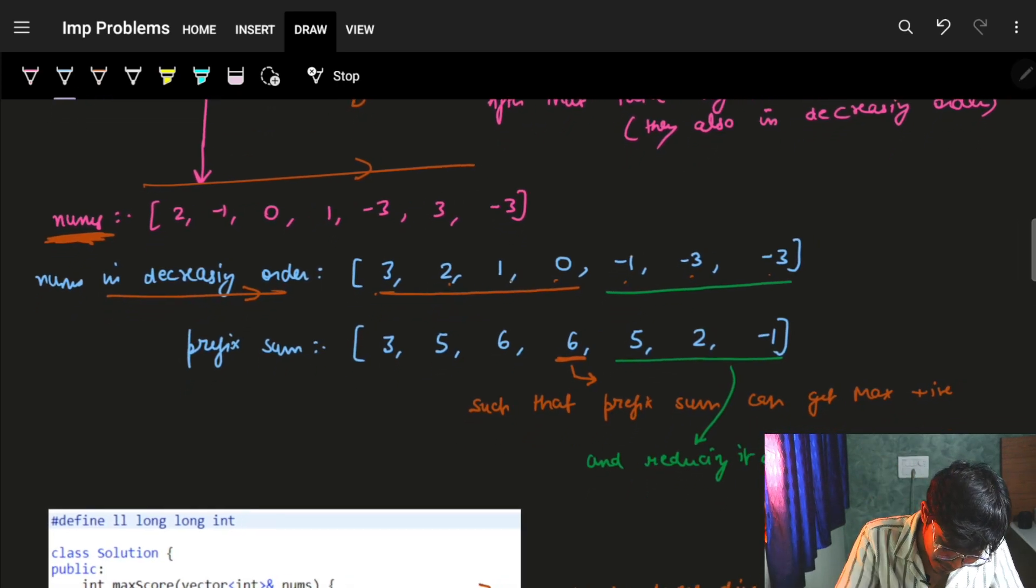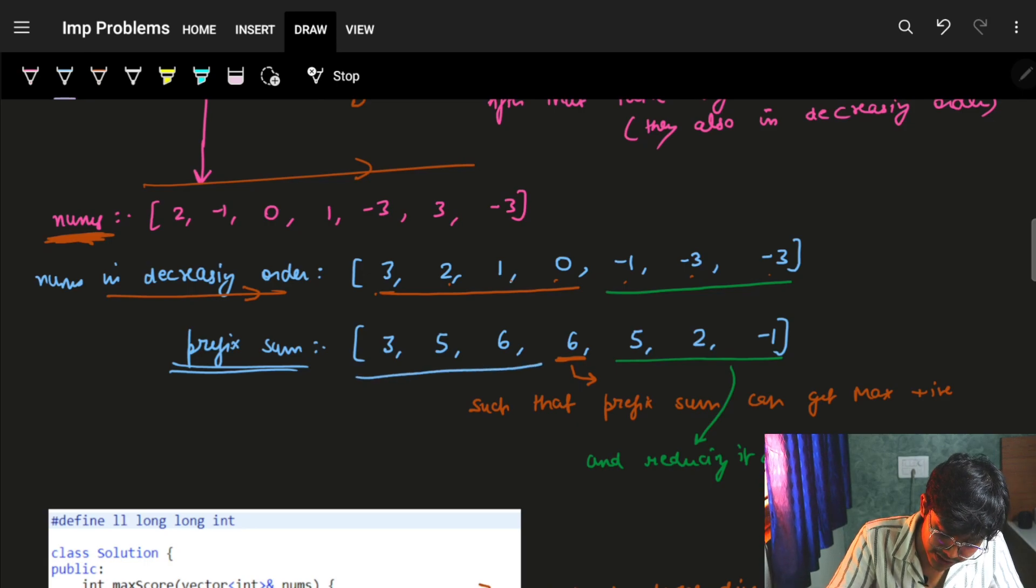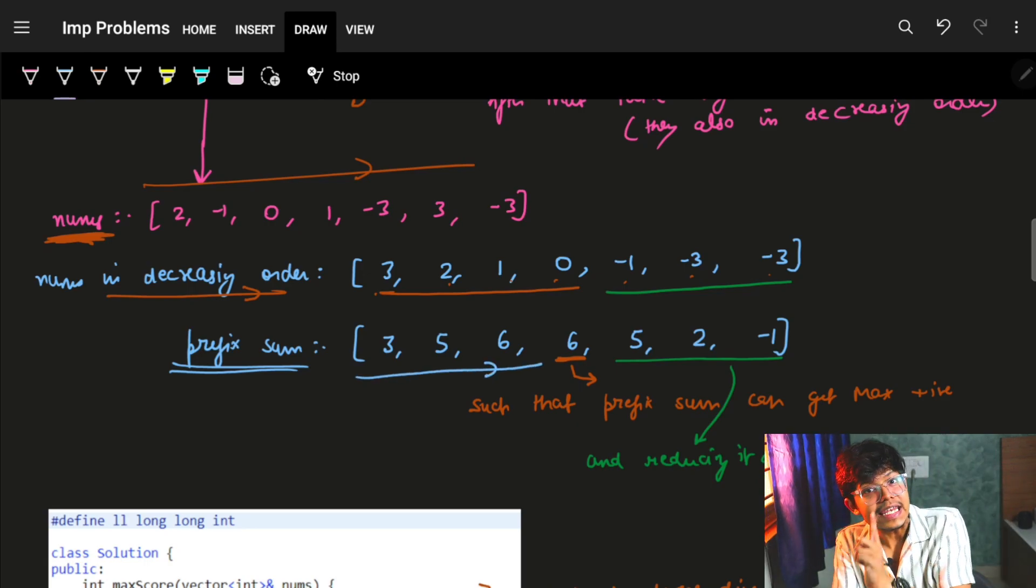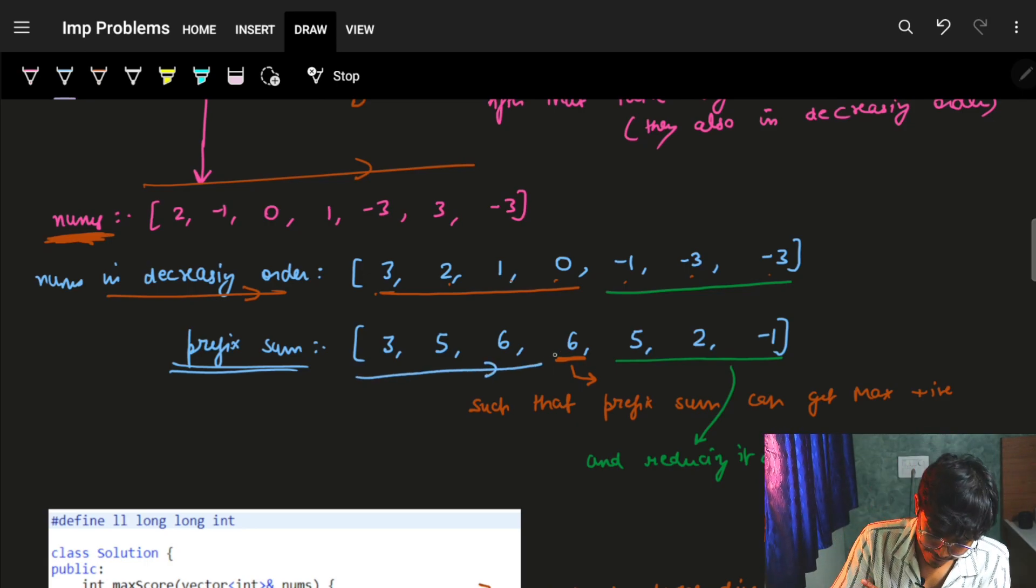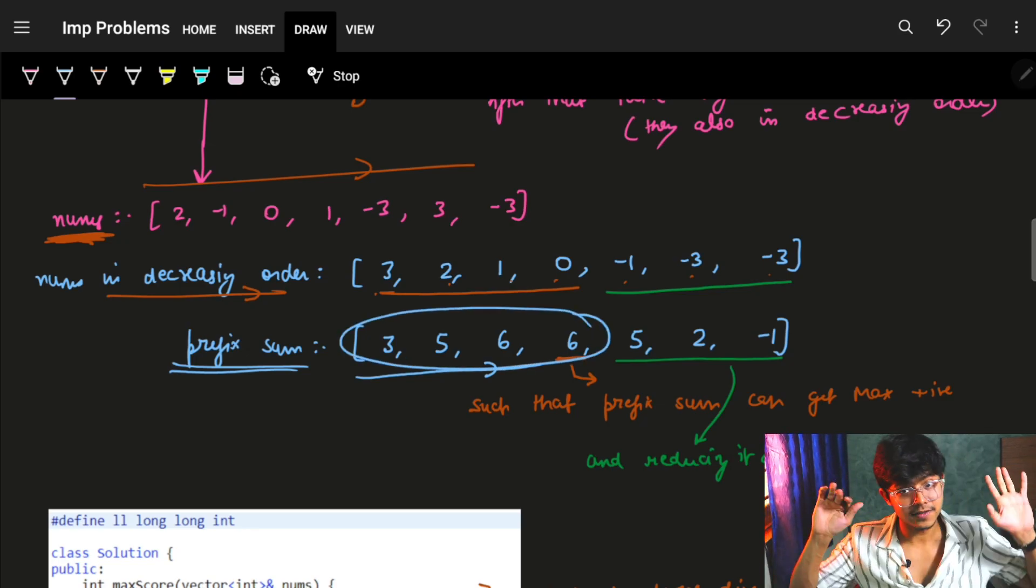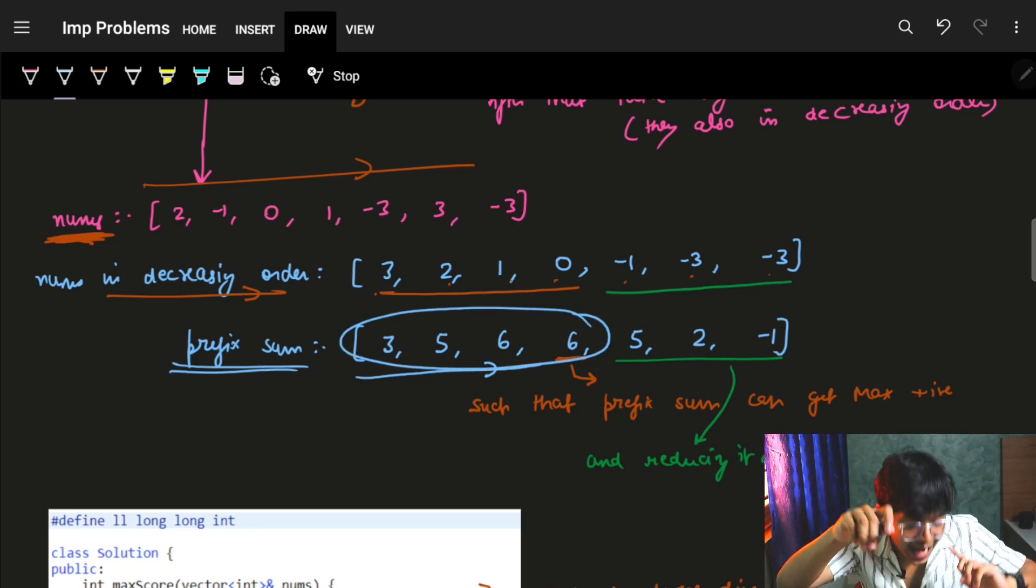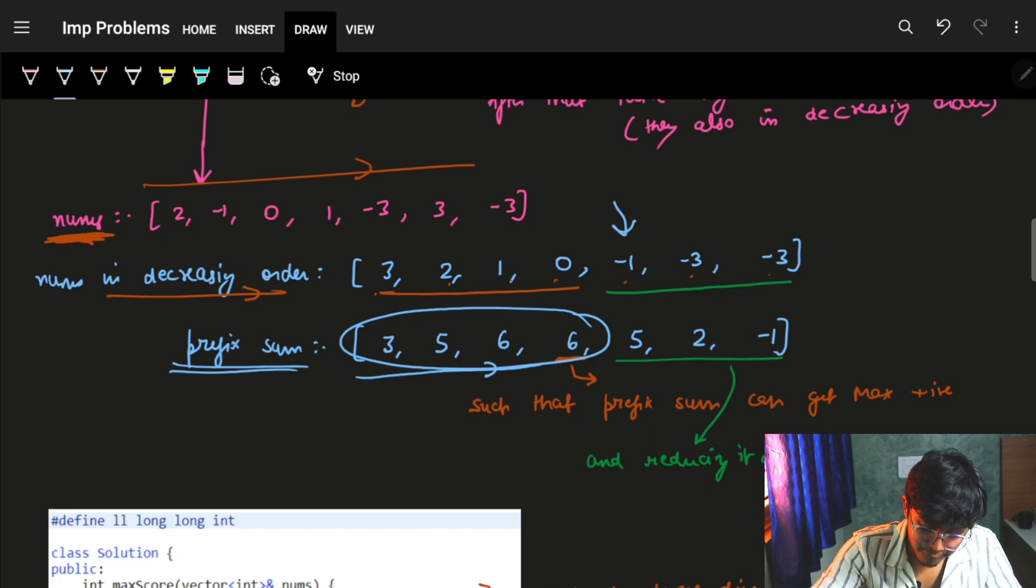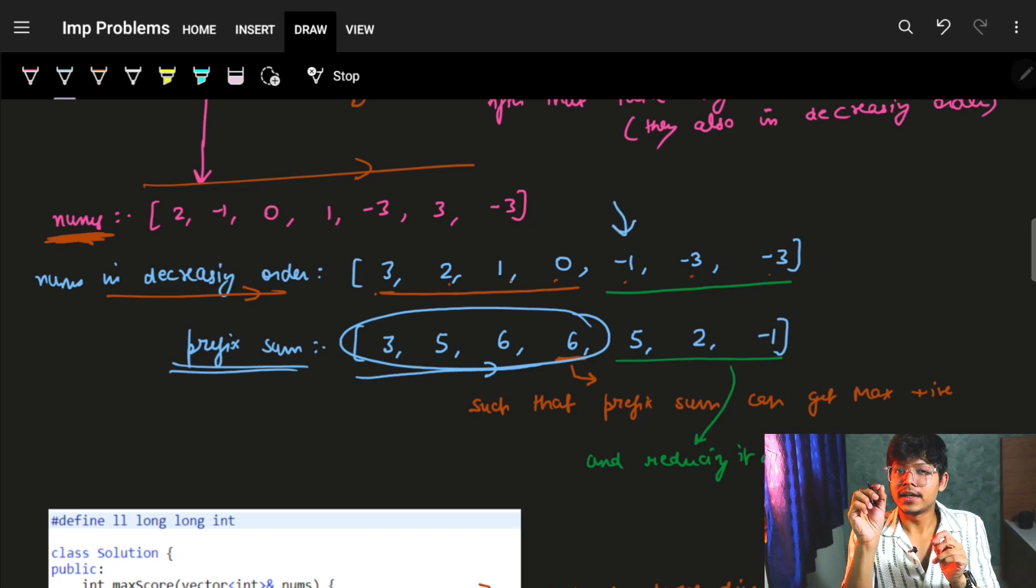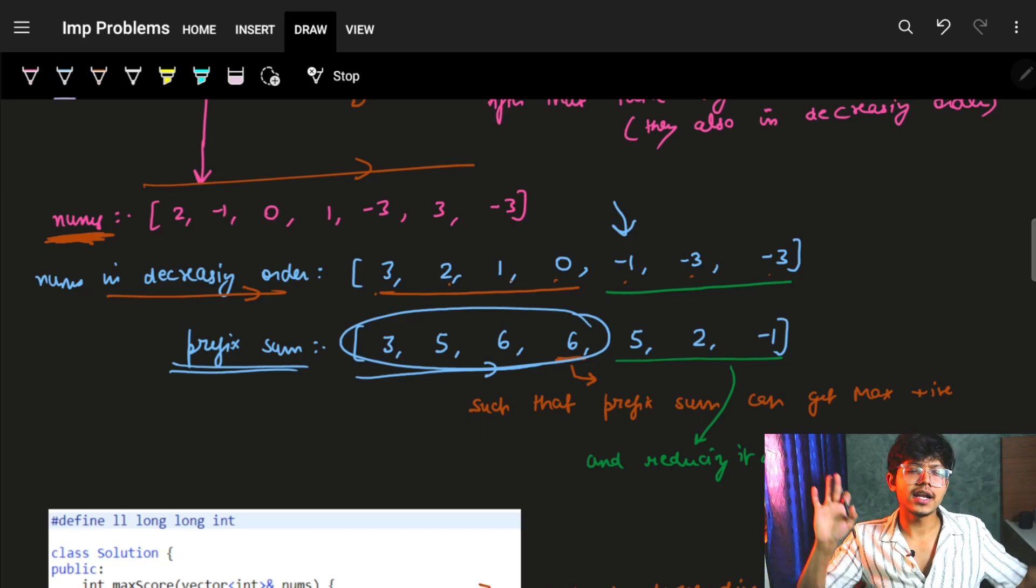What will happen now is my prefix sum will keep on increasing until a negative number arrives. Which means firstly I am getting all positive numbers, and next, whenever a negative number is coming, it's the smallest ever negative number.